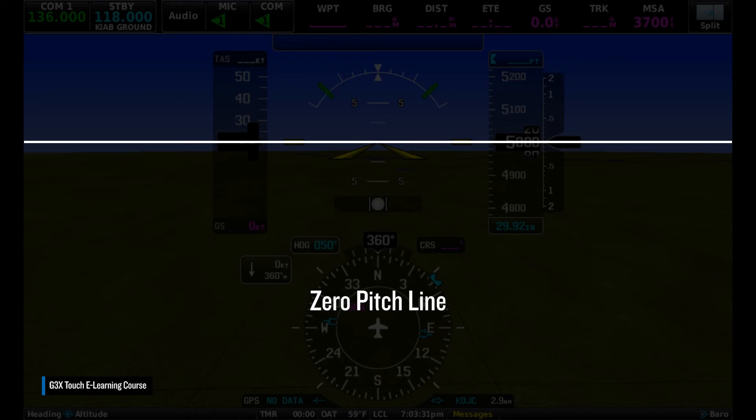It's also important to understand that some aircraft may indicate slightly above the zero pitch line when in straight and level flight, and some aircraft may indicate below the zero pitch line during level flight. So, be sure to note your specific aircraft's attitude indication.